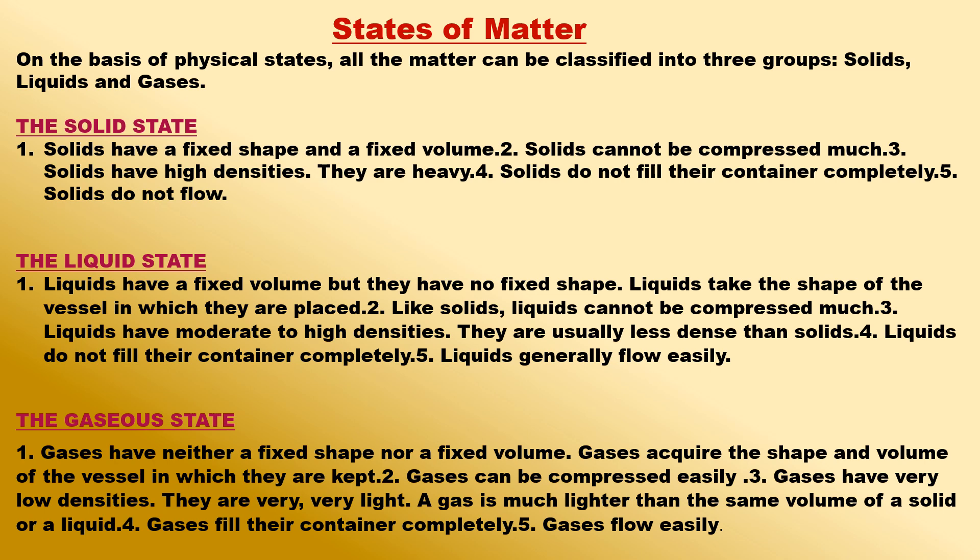The solids, liquids and gaseous forms of matter have different properties. The characteristic properties of solids, liquids and gases are given below. These properties can be used to distinguish between the three states of matter. The solid state: solids have a fixed shape and a fixed volume. Solids cannot be compressed much. Solids have high densities — they are heavy.